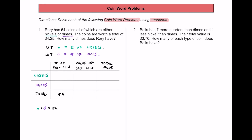If we solve for n by itself, we can say n is equal to 54 minus d. Or we could rearrange it and say d equals 54 minus n. I'm going to use n equals 54 minus d for the nickels row, and just the variable d for the dimes row, so we have one variable instead of two.